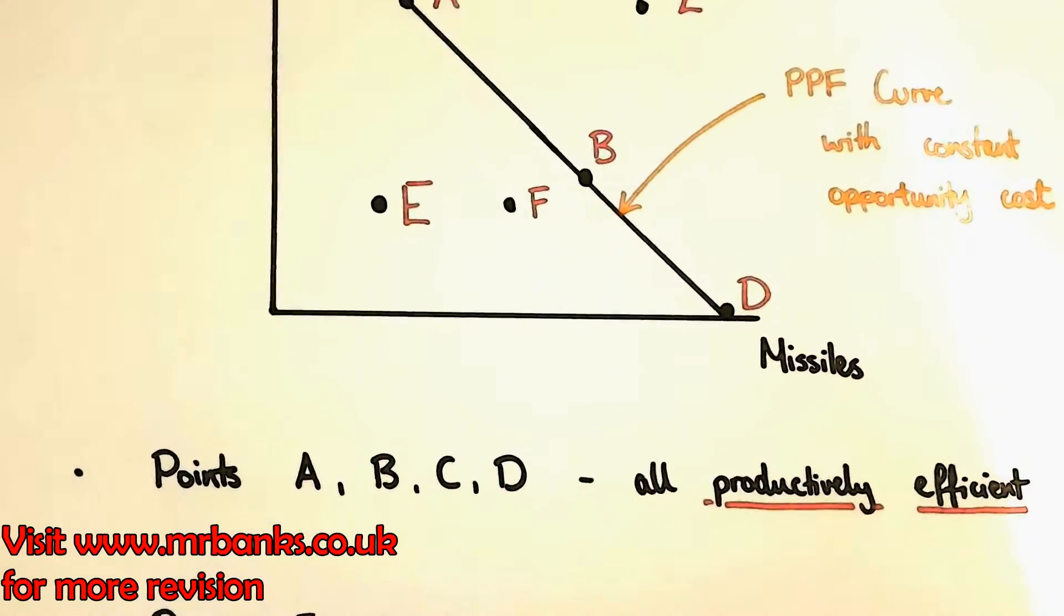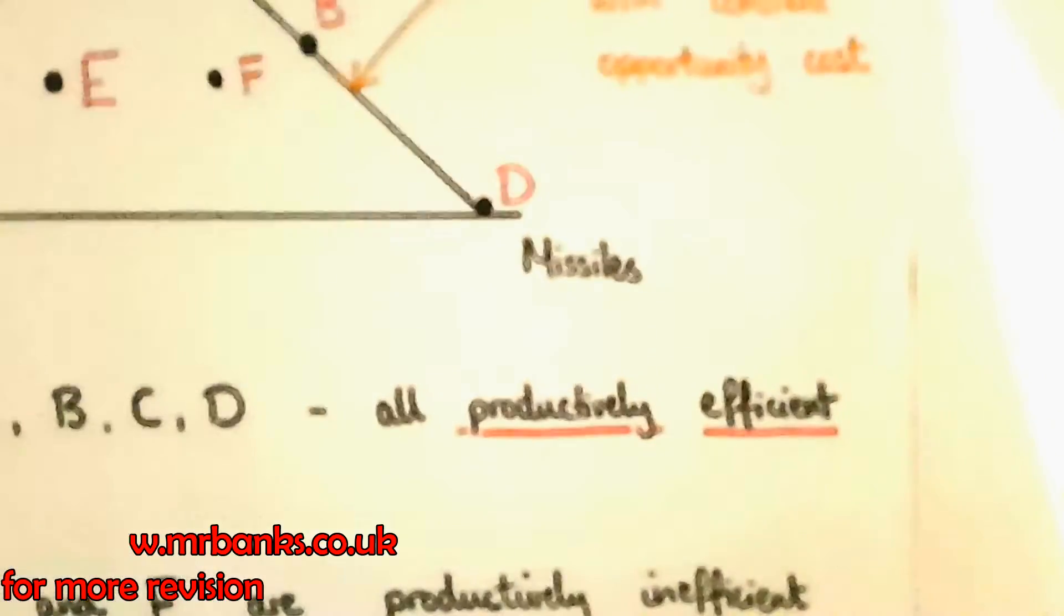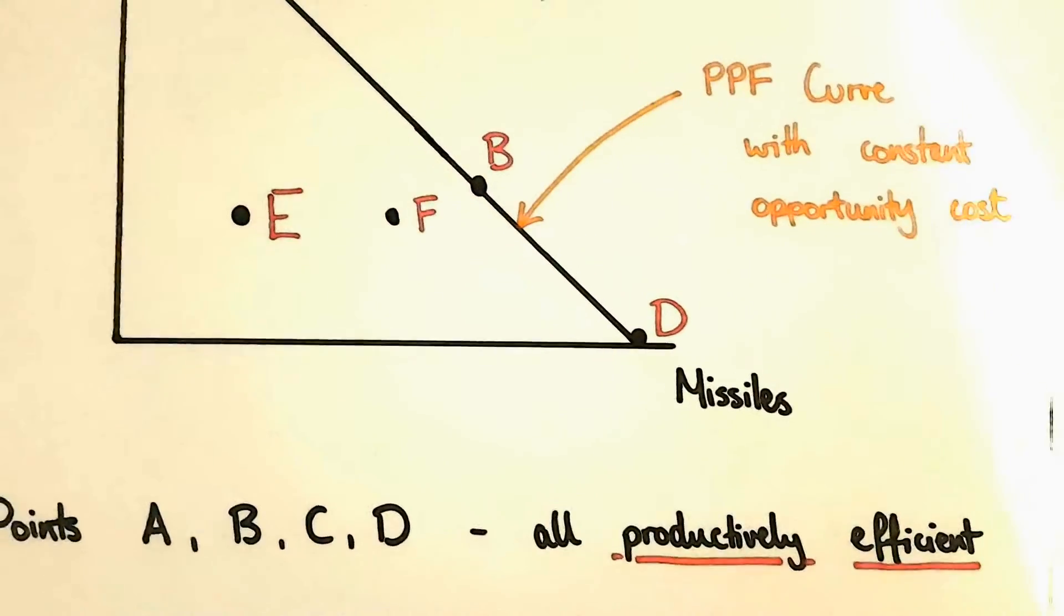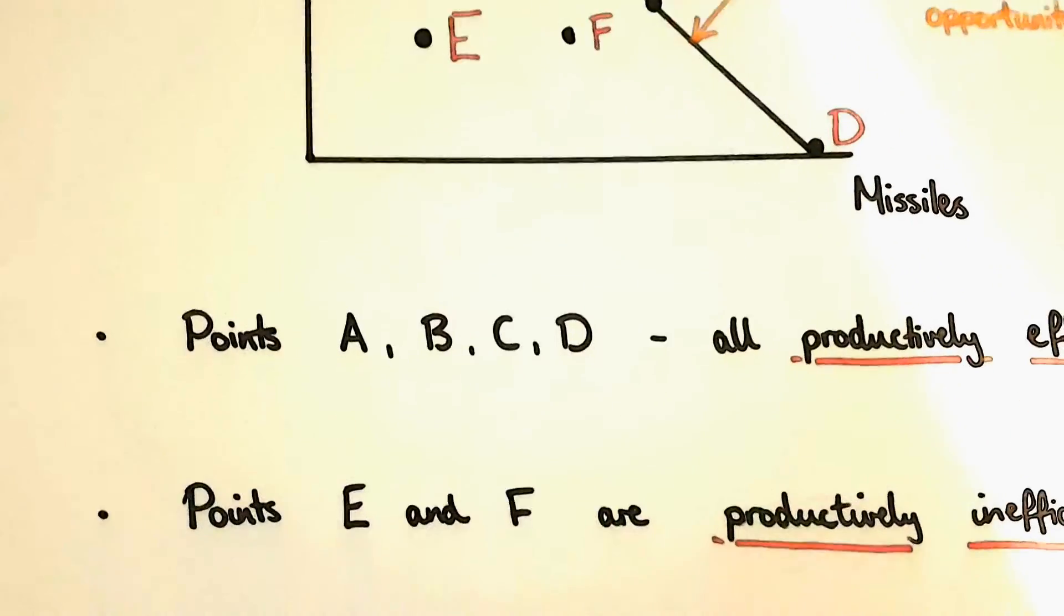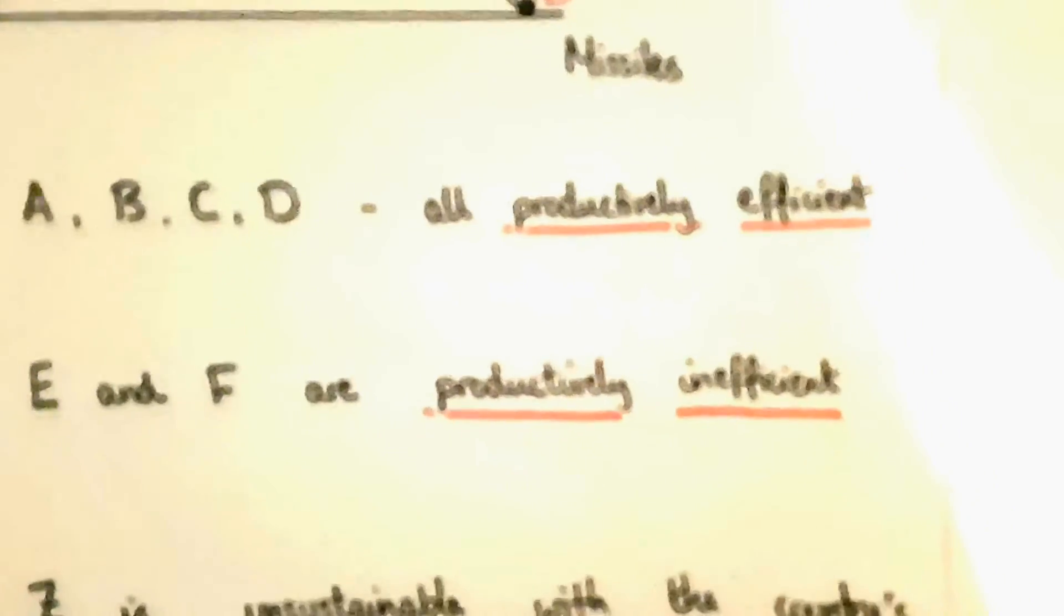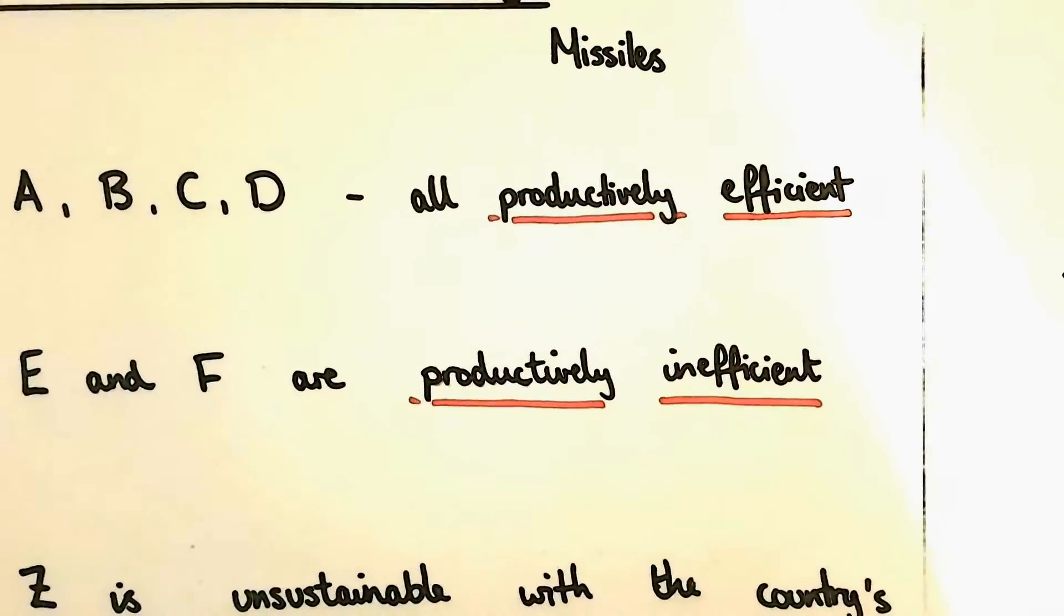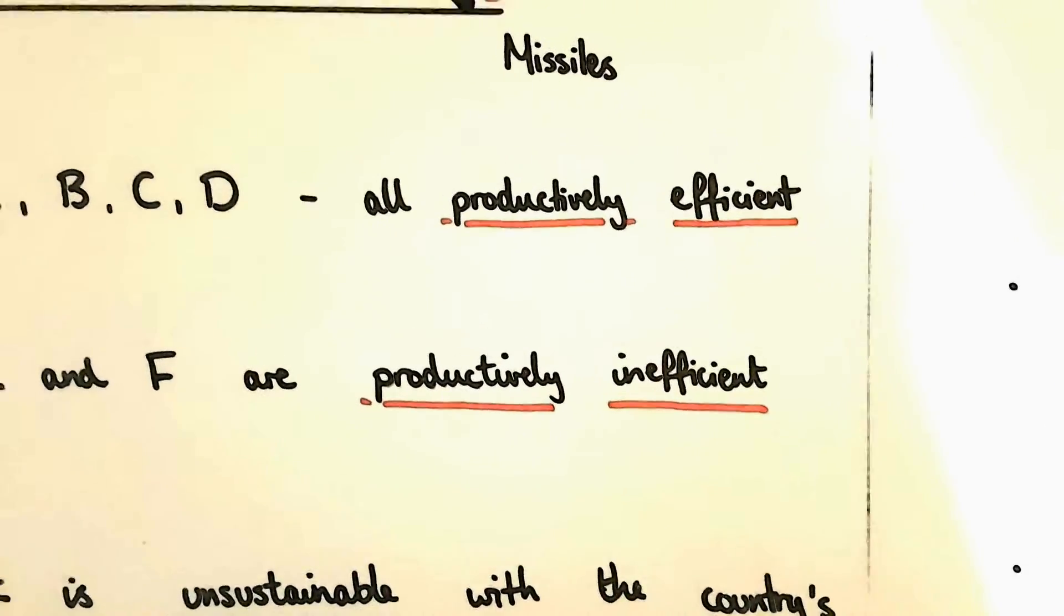So that means points A, B, C and D are all productively efficient. You may have noticed points E and F. These points are inside the curve which means the economy is not using all of the resources available. The economy is not productively efficient at either of these points.